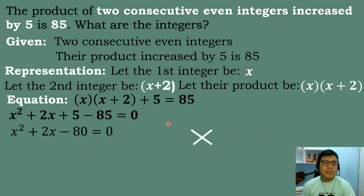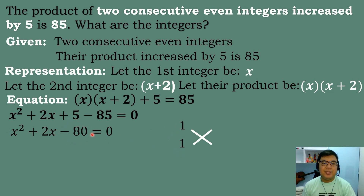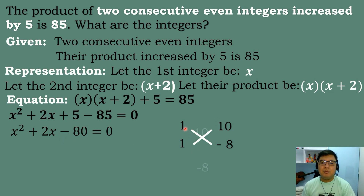Using the factoring crisscross method: the numerical coefficient of the quadratic term is 1, so its factors are 1 times 1. The factors of negative 80 are 10 times negative 8. Performing the crisscross: 1 times negative 8 equals negative 8, and 1 times 10 equals 10. Adding them: 10 minus 8 equals positive 2, matching the coefficient of the linear term. So the factors are correct.